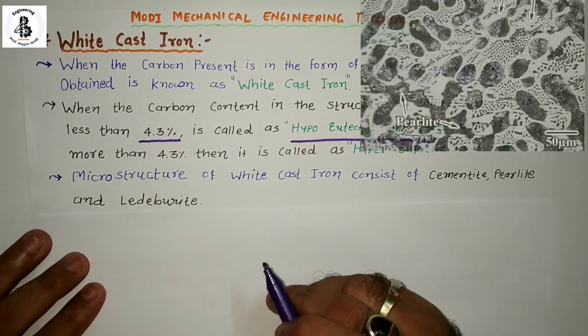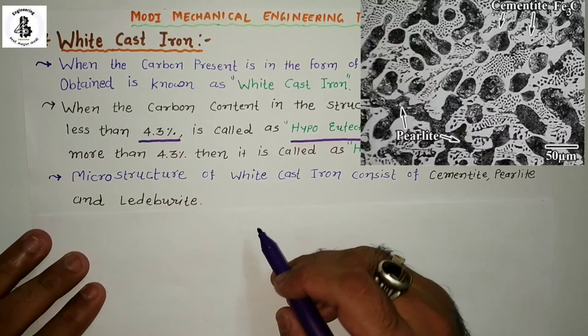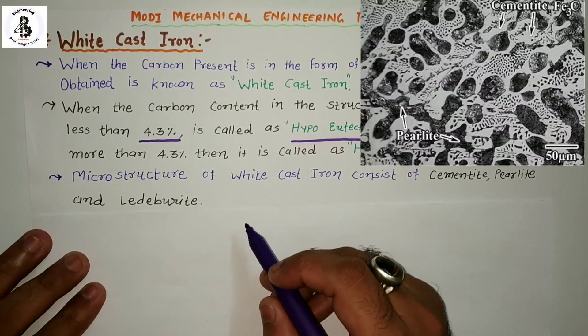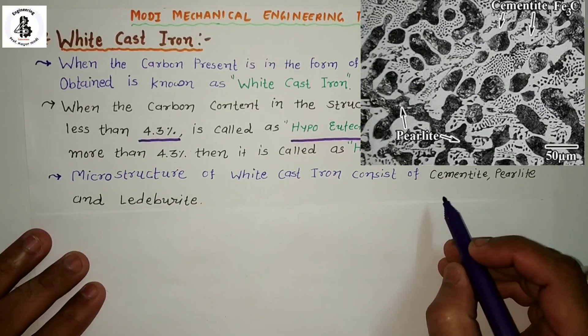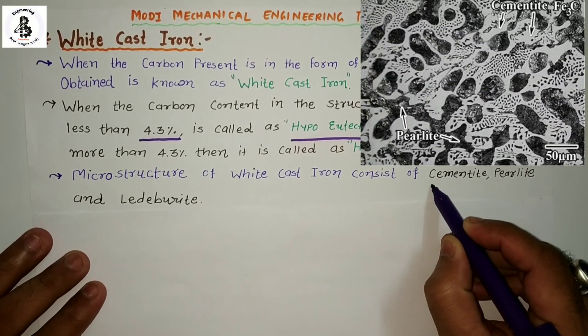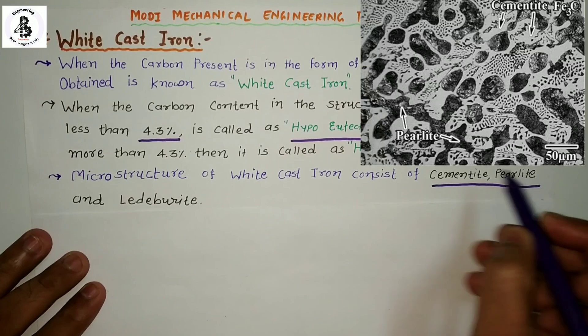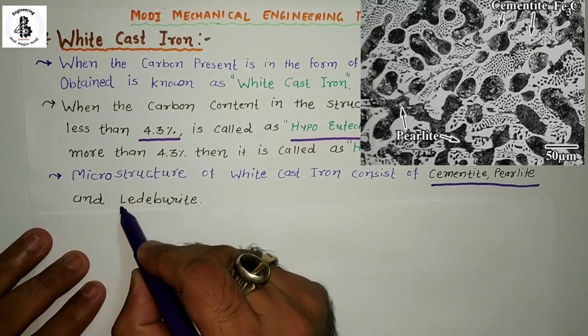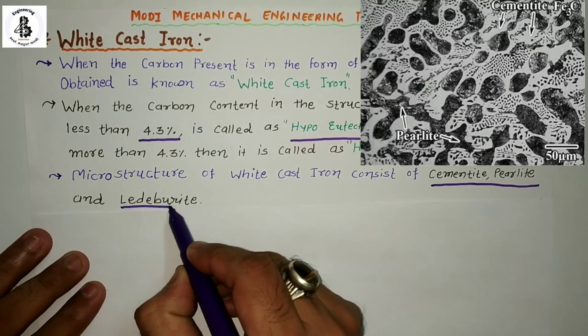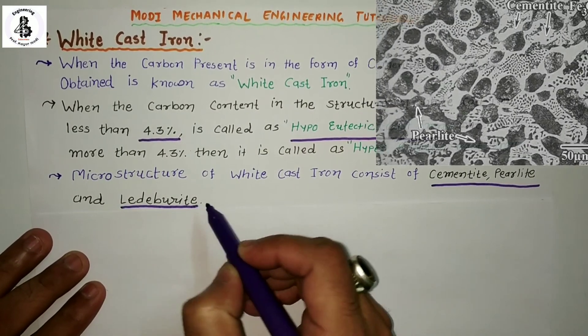Looking at the microstructure of white cast iron, it consists of cementite, pearlite, and ledeburite kind of structure.